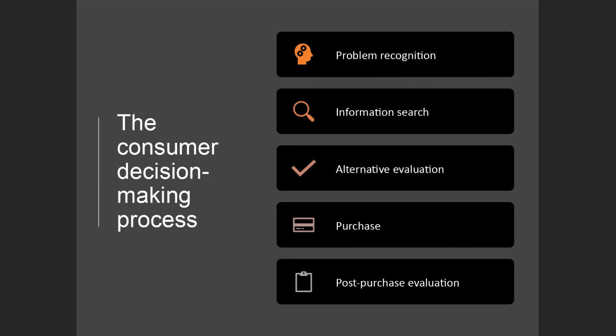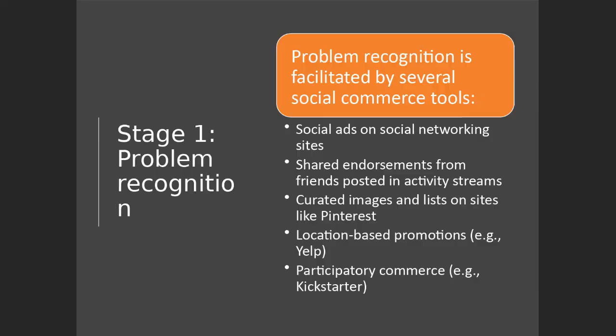After the purchase, I'm either happy, neutral, or dissatisfied — that's the post-purchase evaluation. Maybe I have some cognitive dissonance because I paid too much for the tire, or I forgot we were going to sell that car anyway. That's the typical consumer decision-making process, though it doesn't always work that way — if you're in the checkout line at Kroger and grab a Twix bar, you didn't go through all that. You saw the Twix bar, thought you'd like one, and bought it from experience. If we apply this to social commerce via social media platforms or communities, it works similarly.